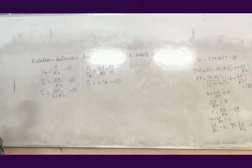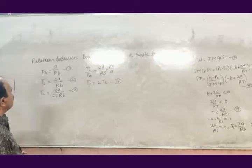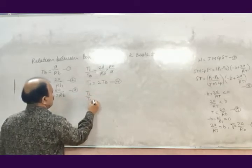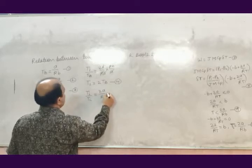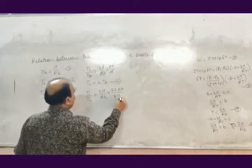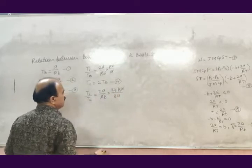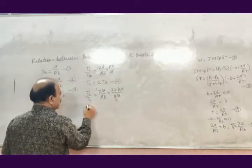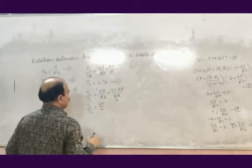Now let us find the relation between Ti and Tc. Divide equation 2 by equation 3, so Ti / Tc = (2A / Rb) multiplied by (27Rb / 8A). R, B, and A all cancel out, giving Ti / Tc = 27 / 4, equation number 5.